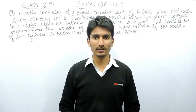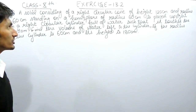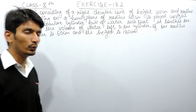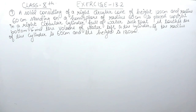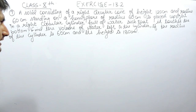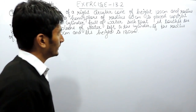Hello everyone, we are from True Maths and in this video we are going to solve question number 7 of Exercise 13.2. The question says: a solid consisting of a right circular cone of height 120 centimeters and radius 60 centimeters, standing on a hemisphere of radius 60 centimeters, is placed upright in a right circular cylinder full of water such that it touches the bottom. You have to find the volume of water left in the cylinder if the radius of the cylinder is 60 centimeters and its height is 180 centimeters.